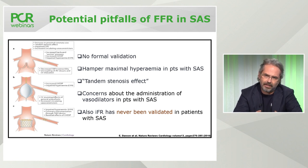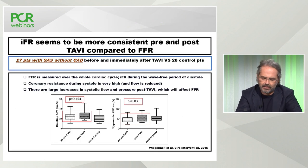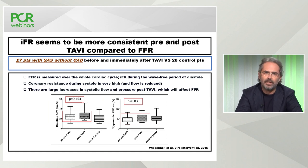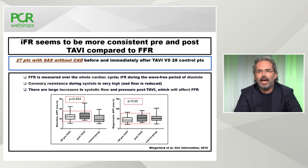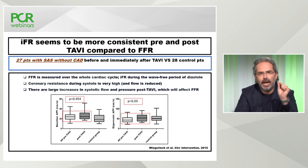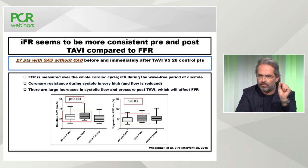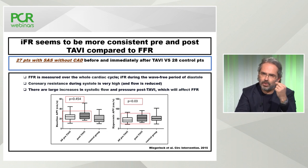However, there is physiological plausibility to favor iFR — a diastolic-only index — compared to indices mixing systole and diastole. In a study of 27 patients with severe aortic stenosis and unobstructed coronaries, measuring average peak flow velocity before versus after TAVI in resting conditions showed no changes. But with maximal hyperemia and vasodilation, relieving the stenosis with TAVI significantly increased average peak velocity.